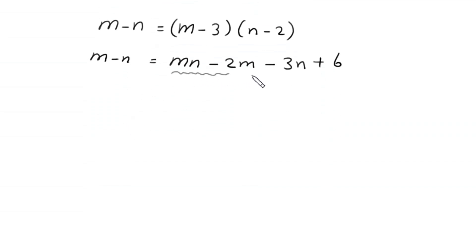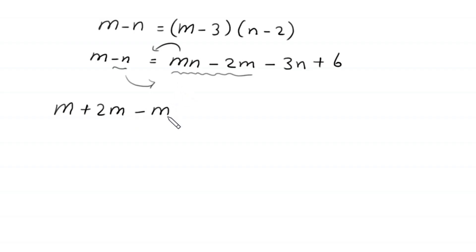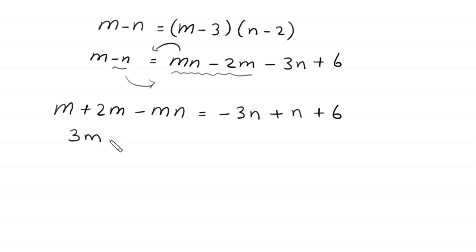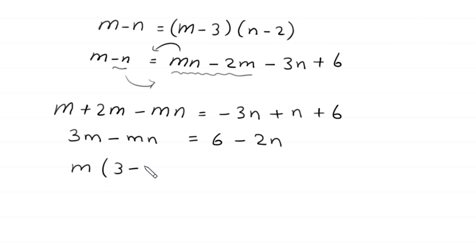Expanding the right side: m minus n equals mn minus 2m minus 3n plus 6. Moving mn and minus 2m to the left side gives m plus 2m minus mn equal to negative 3n plus n plus 6, so 3m minus mn equals 6 minus 2n. Factoring both sides: m times (3 minus n) equals 2 times (3 minus n).